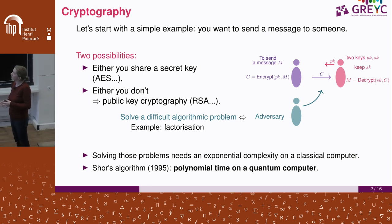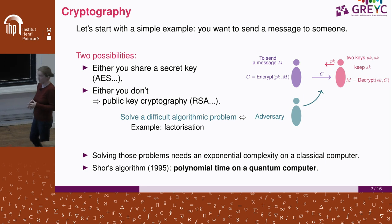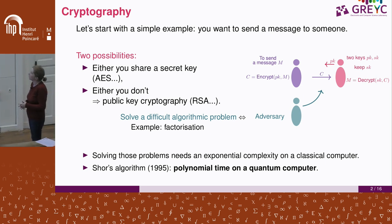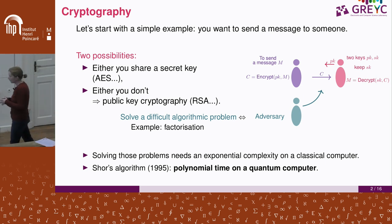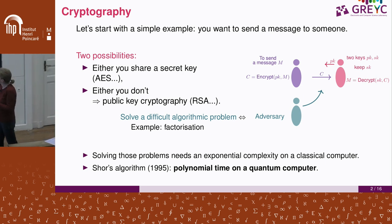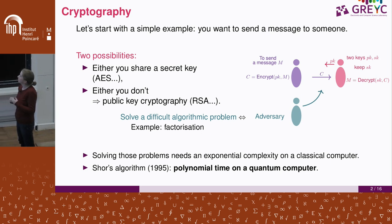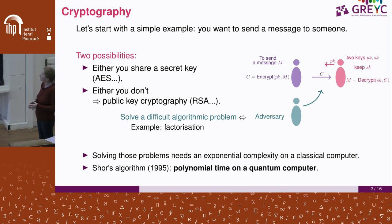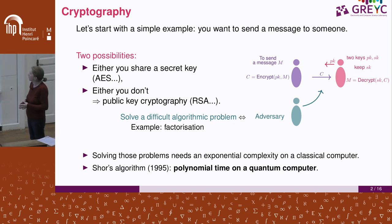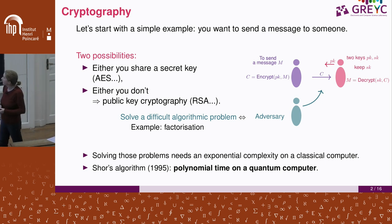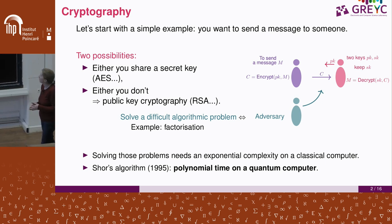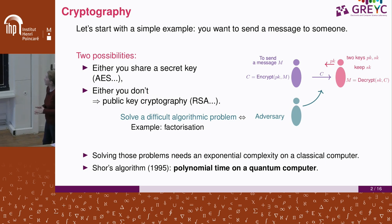This is less efficient than symmetric cryptography, and it's a bit more complicated to have efficient and secure solutions. But we really need this. What we use today is either RSA, which you probably know, or ElGamal, which is an encryption scheme on elliptic curves.